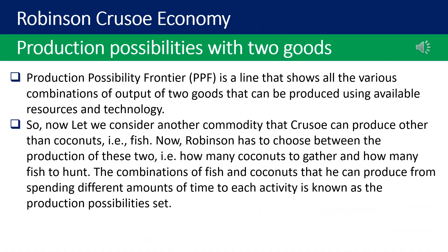Production Possibility Frontier (PPF) is a line that shows all the various combinations of output of two goods that can be produced using available resources and technology. Now consider another commodity that Crusoe can produce other than coconuts, i.e., fish. Robinson has to choose between the production of these two: how many coconuts to gather and how many fish to hunt. The combinations of fish and coconuts that he can produce by spending different amounts of time on each activity is known as the Production Possibility Set.